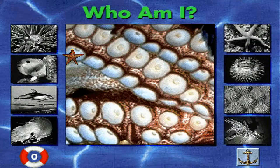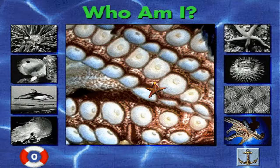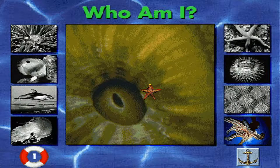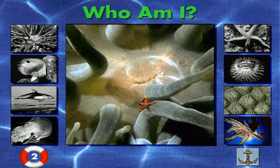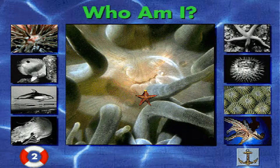Who am I? Can you guess which animal this is a part of? You're right! I'm an octopus, and that's my suction cup. Can you guess which animal this is a part of? You're right! I'm a coral, and that's my polyp. Can you guess which animal this is a part of? You're right! I'm a sea anemone, and that's my mouth.